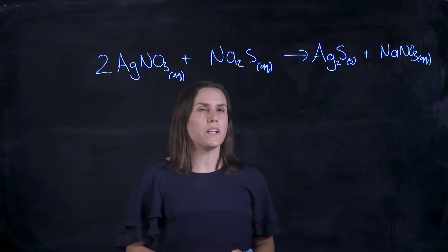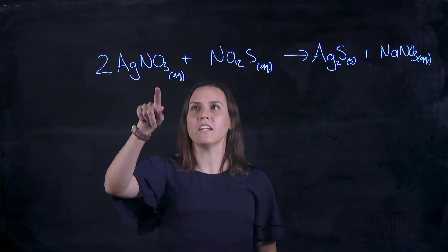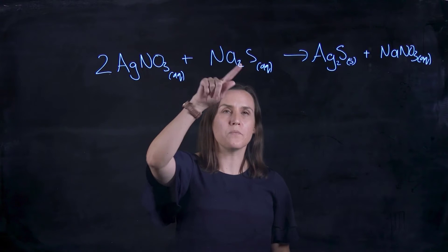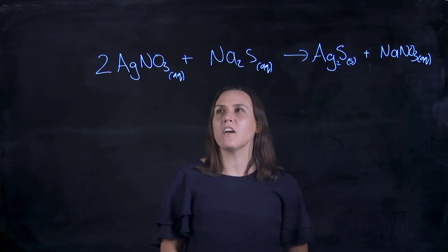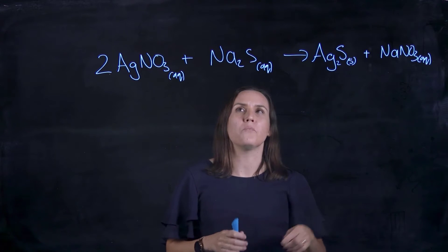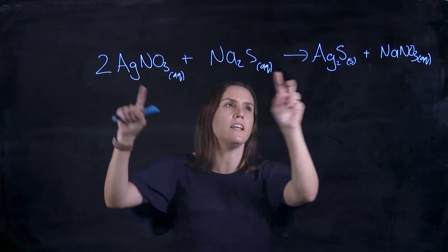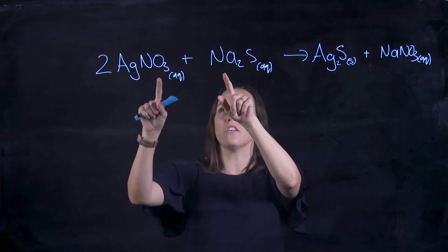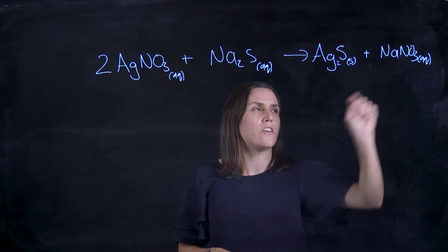So this one here, we have silver nitrate and sodium sulfide and they're going to swap their partners and produce silver sulfide, Ag2S, and sodium nitrate, NaNO3.